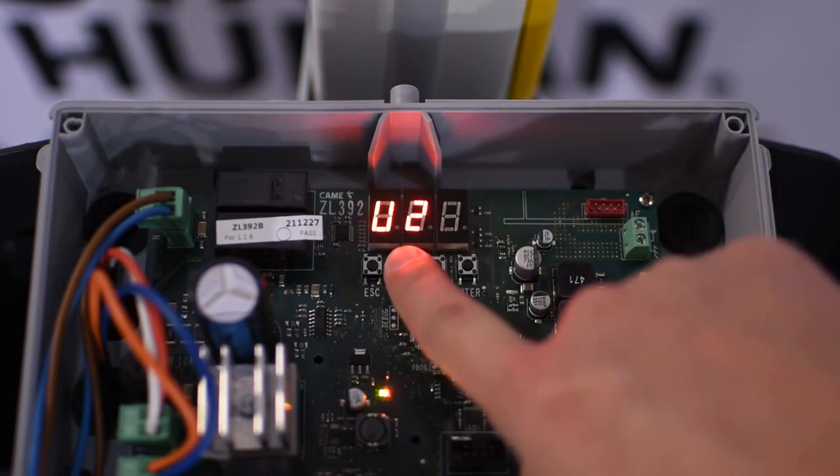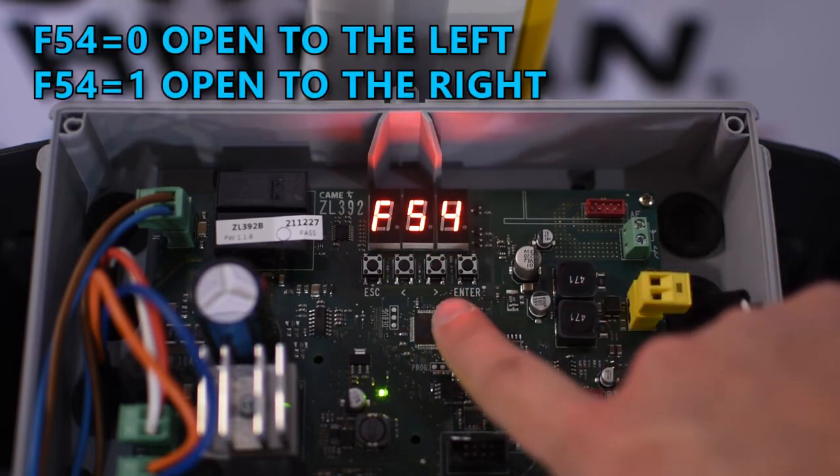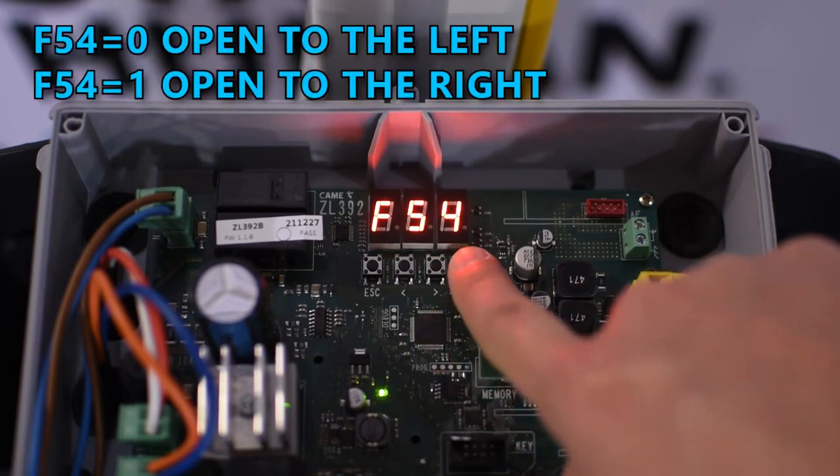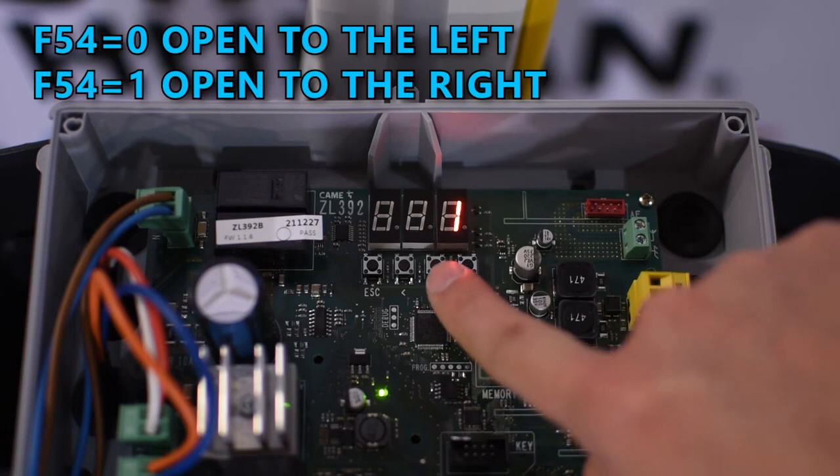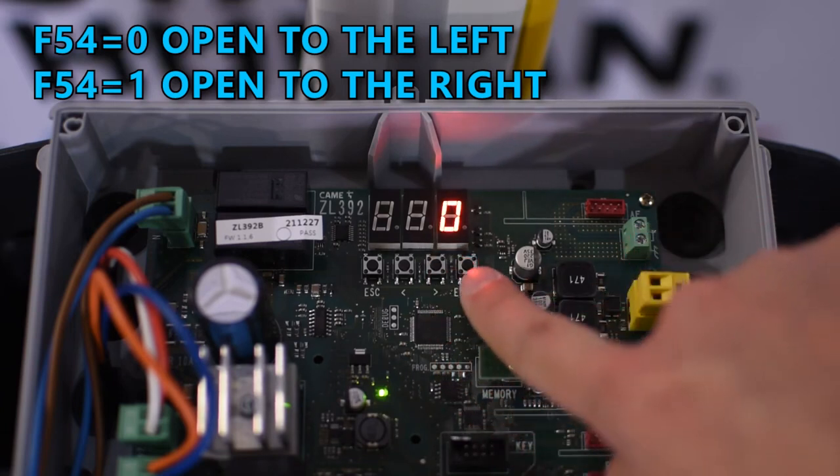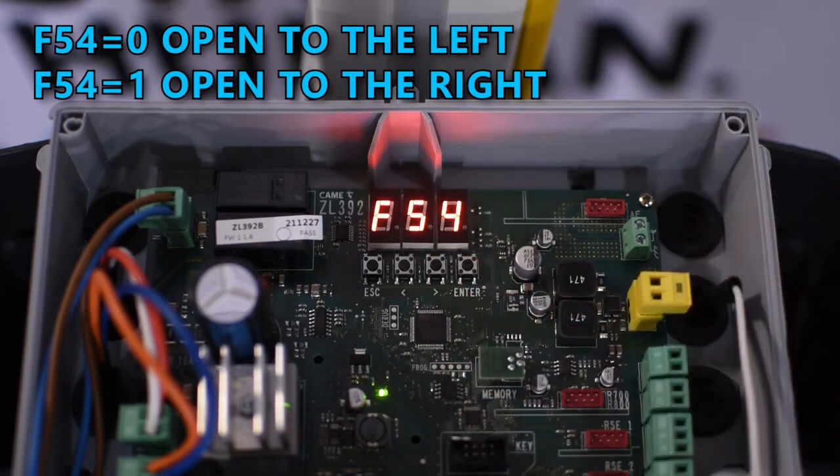The first basic step in the configuration process is to set the opening direction. So go to F54 and select the corresponding value. If the barrier opens to the left the value must be 0. If it opens to the right you need to set it to 1. In my case it opens to the left so I put it in 0. Remember to press enter to confirm the selection.